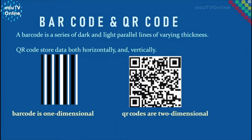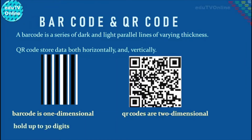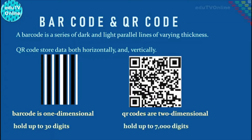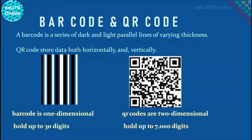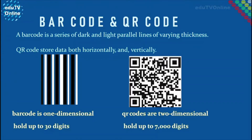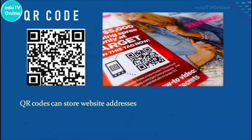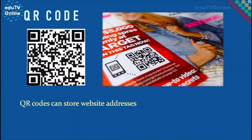Normal barcodes can hold up to 30 digits, but QR codes can hold up to 7,000 digits. That means they can give a much greater scope of storage. QR codes can store website addresses that appear in magazines, trains, buses, or even on business cards.